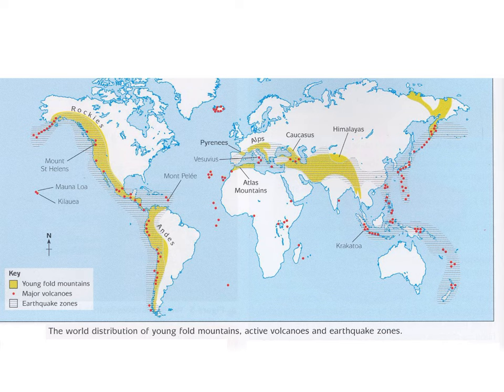Some fold mountains started forming 400 million years ago, and some have only started forming 35 million years ago. So some fold mountains are really, really old and have been exposed to weathering for 400 million years, worn down by the weather year after year. Whereas the really young ones, like the Alps, only started forming 35 million years ago, so they're still really high with a lot of weathering still to attack them.